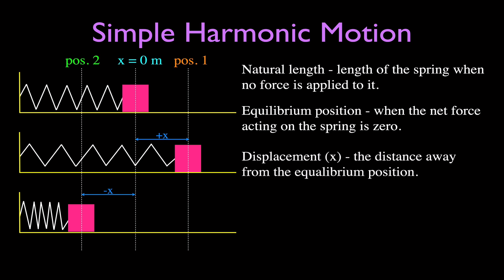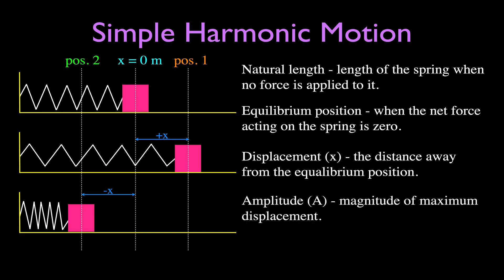Then we have displacement, which gets the symbol x, even in the vertical direction. The displacement is the distance away from the equilibrium position. If we extend the spring, this is displacement in the positive direction; if we compress it, the displacement is in the negative direction. There's also the amplitude, given the symbol capital A, which is the magnitude of the maximum displacement — when you reach the maximum displacement, that is the amplitude.